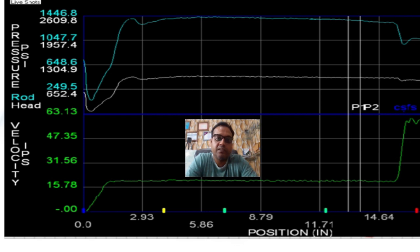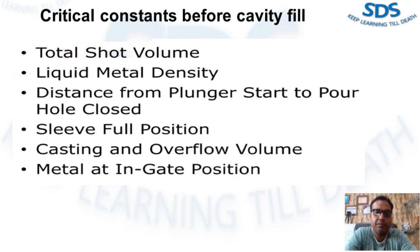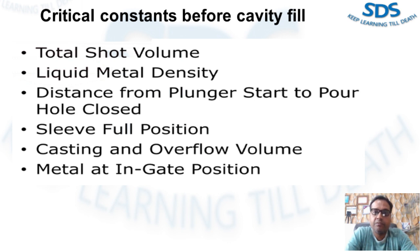To determine the best settings for these process parameters, several values must be known. These values are: total shot volume, which can be determined from the CAD geometry file in the design phase or by weight scale on the production floor; liquid metal density, which varies by alloy chemistry; distance from the plunger start to pour hole close, required to determine slow shot start position; sleeve full position, which can be calculated from the impact position using the shot weight, liquid metal density, and plunger area; casting and overflow volume, determined from CAD geometry or estimated; and metal-at-ingate position, calculated from the impact position using the weight of metal through the gate, liquid metal density, and plunger area.